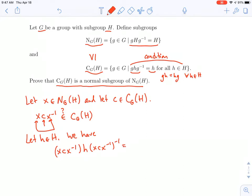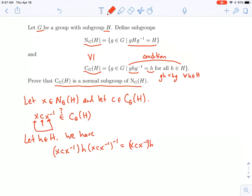And let's see. So first, I'll expand this inverse. I get xcx inverse h. And then when I expand, you're inverting a product, so you reverse the order and then invert everything. And so I'll end up with xc inverse x inverse.